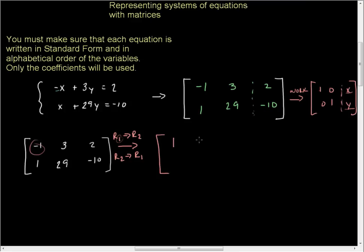I can rewrite this. The bottom row comes to the top as 1, 29, negative 10. The top row goes to the bottom as negative 1, 3, and 2. The reason I do this is I tend to work in a U shape. I tend to work down, then over, then back up. That's how I want to show it here.